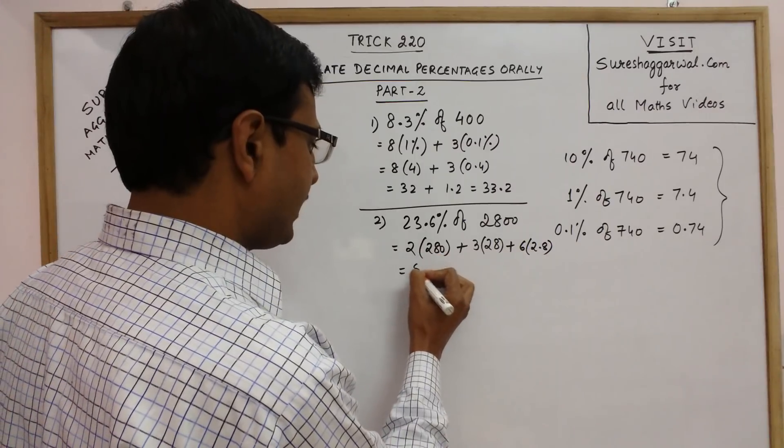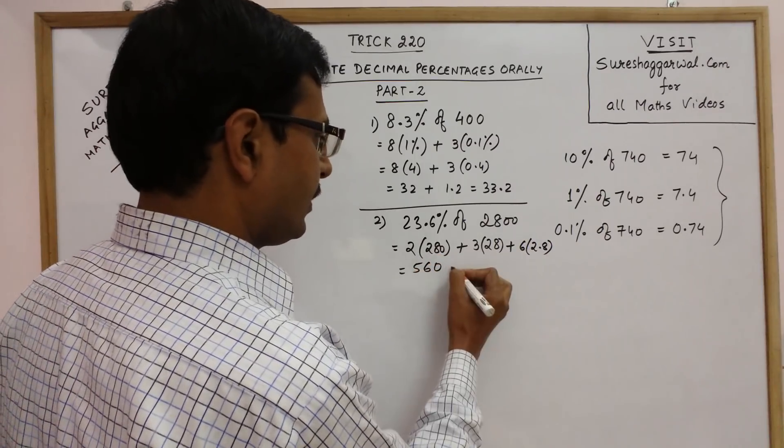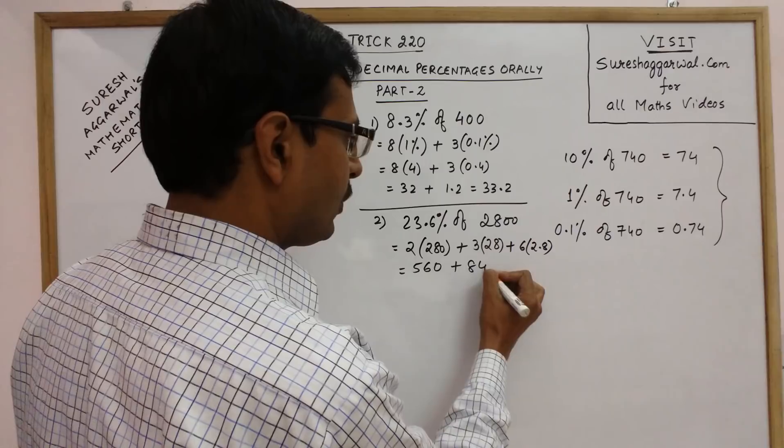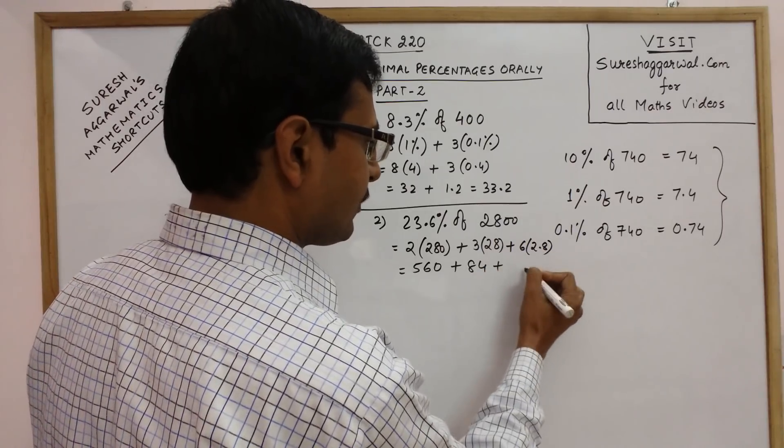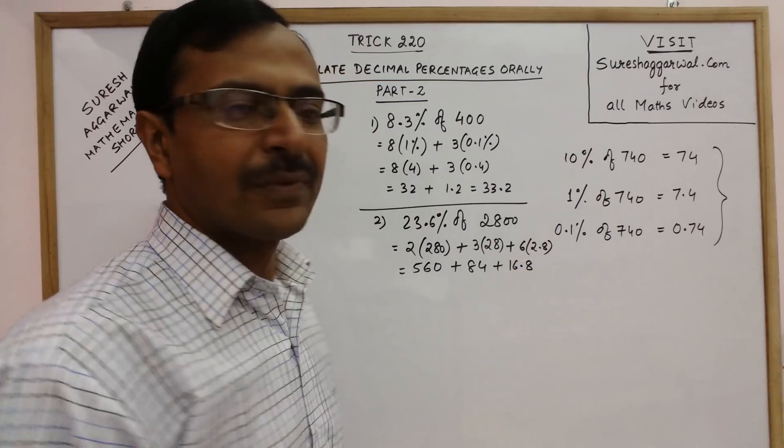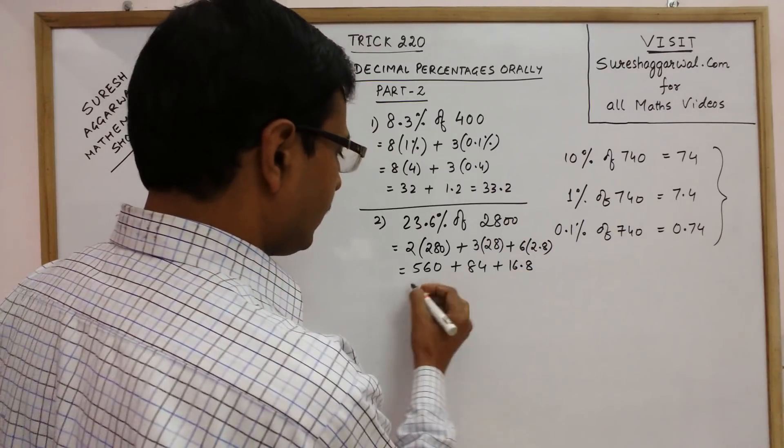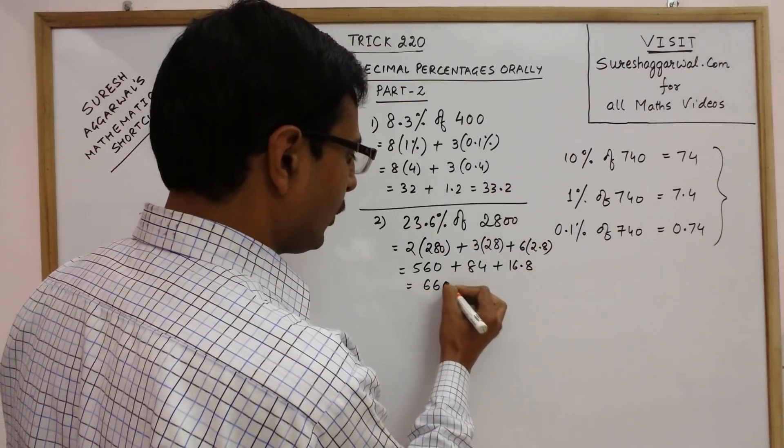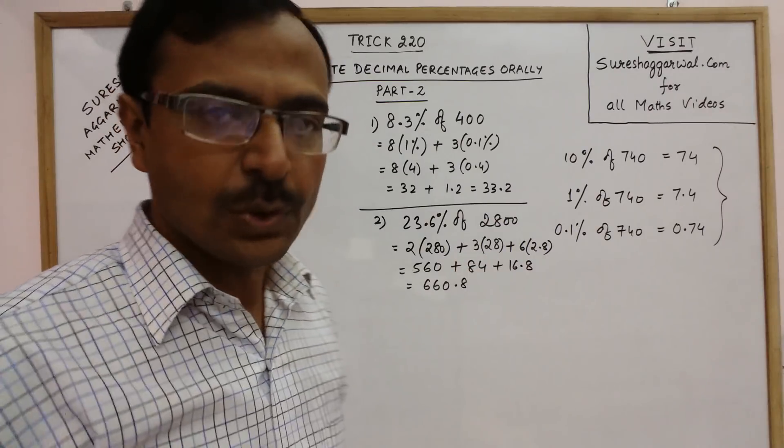Now see, 2 times 280 is 560, 3 times 28 is 84, and 6 times 2.8 is 16.8. So when you total this up this will be 660.8 which is your answer.